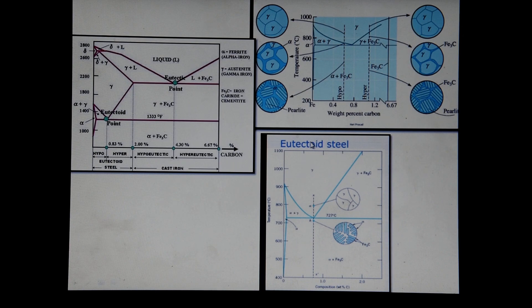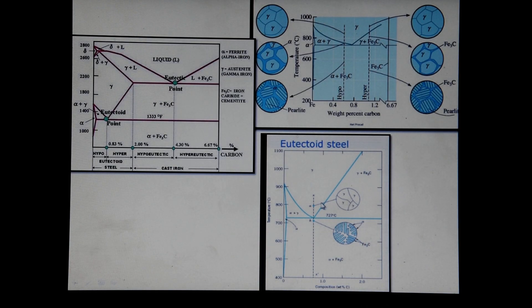Finally, looking at the eutectoid reaction: here we convert directly from the gamma phase to pearlite. We do not have alpha or cementite forming on the grain boundaries first — it is a complete and direct conversion from austenite to pearlite, where pearlite is alpha plus cementite.